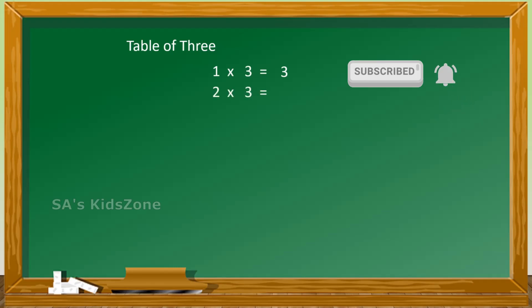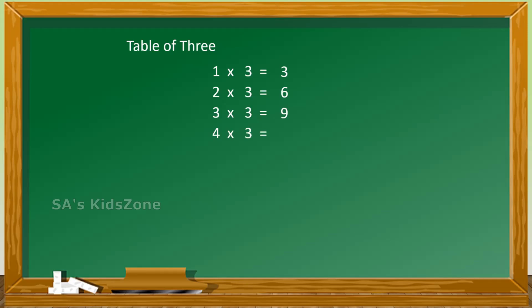3 threes are 9, 4 threes are 12, 5 threes are 15, 6 threes are 18, 7 threes are 21.